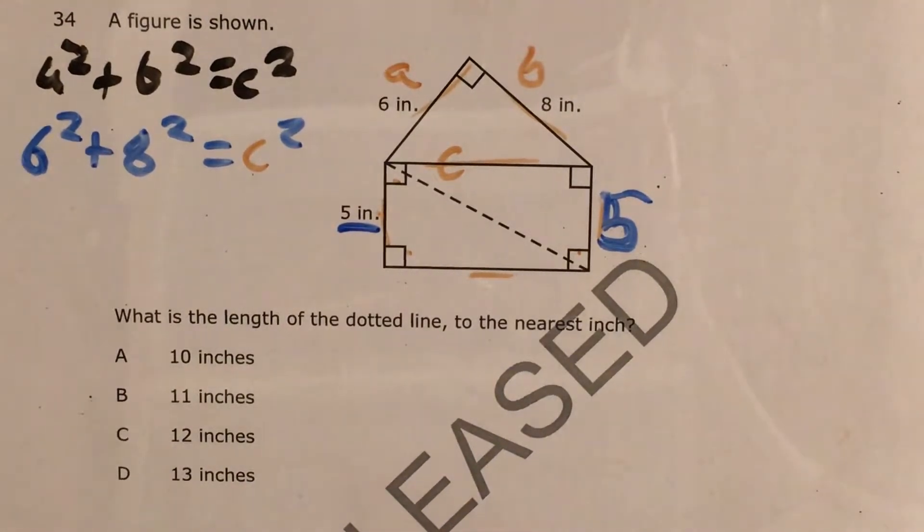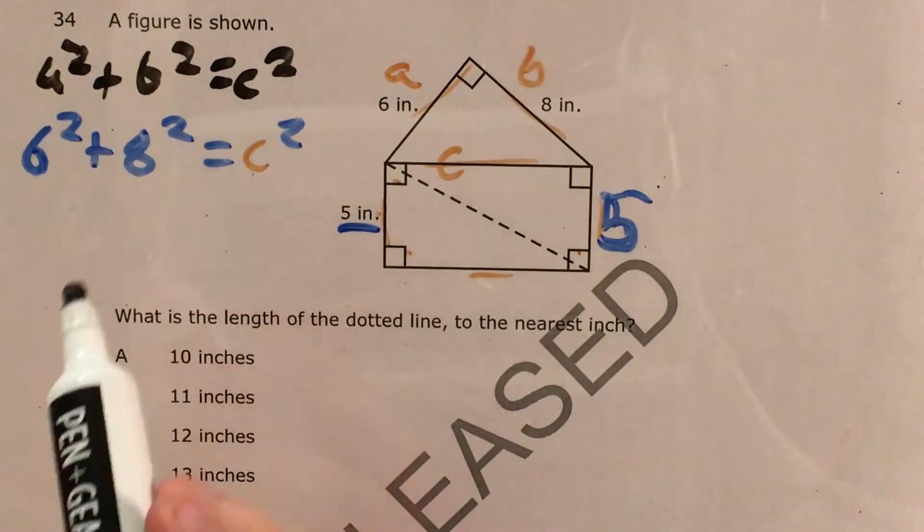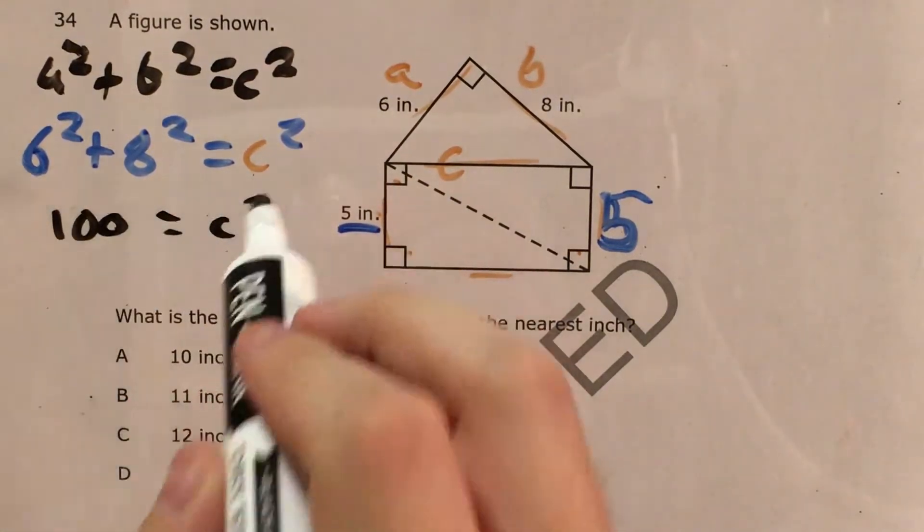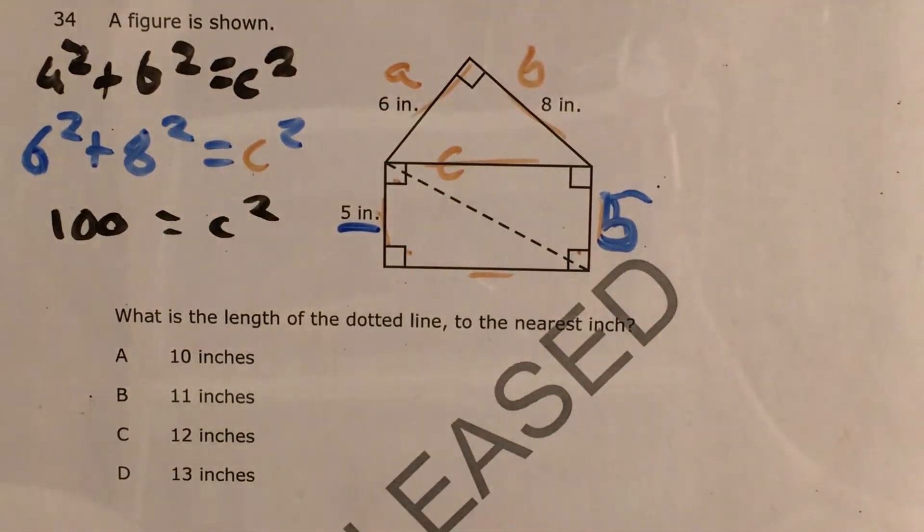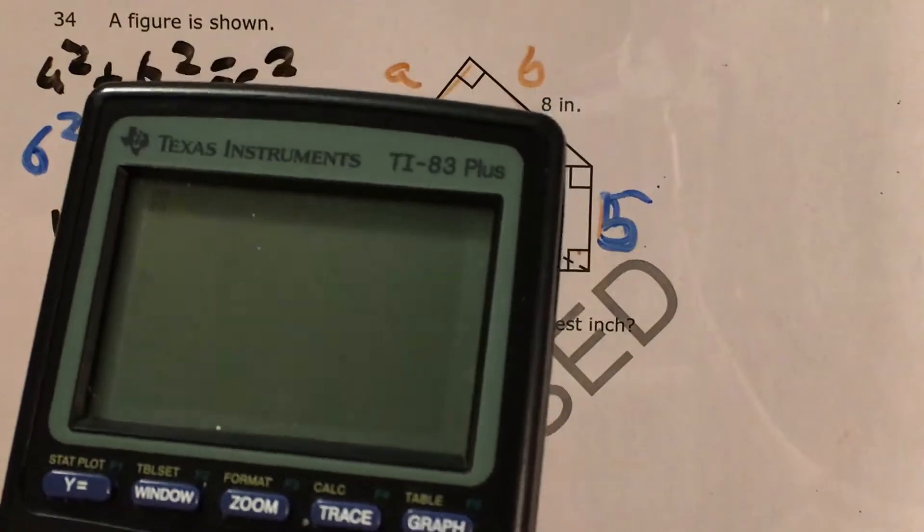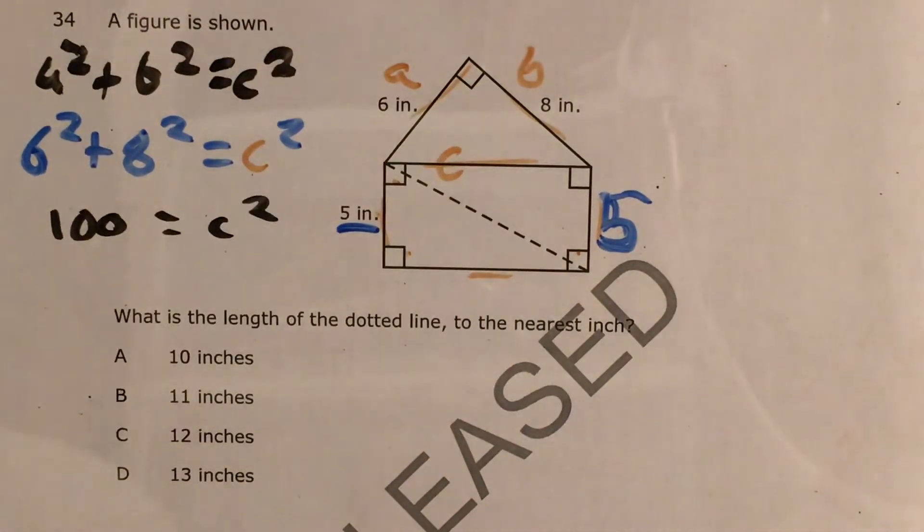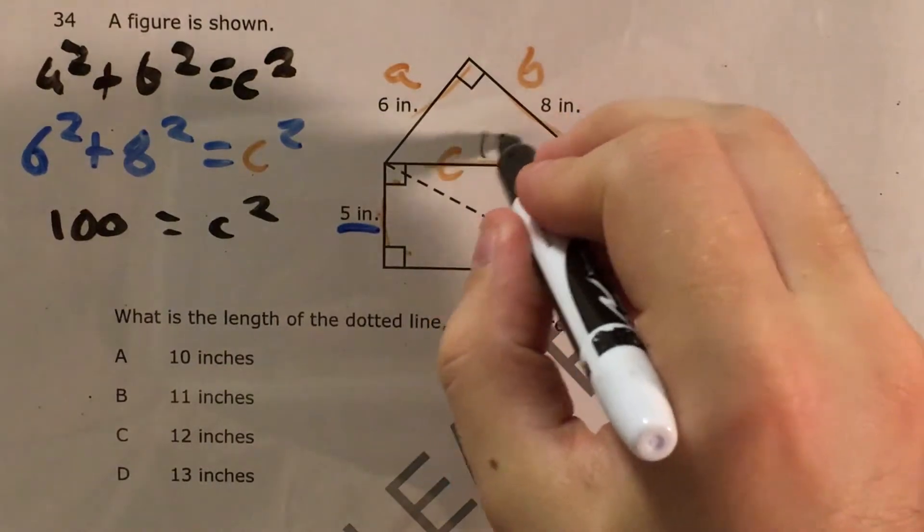Now whether I use my calculator or my times tables or mental math or whatever, I should know that 6 squared is 36 and 8 squared is 64, and that is actually 100. And if I know that 100 is some number times itself, I can use times tables or I can plug the square root in my calculator. So the square root of 100 is 10. So this C equals 10.